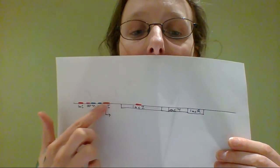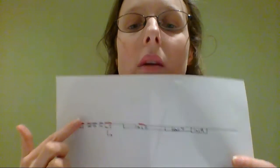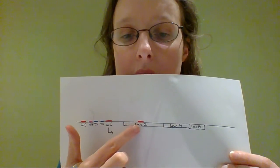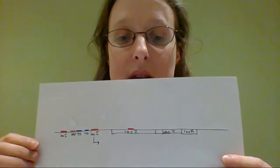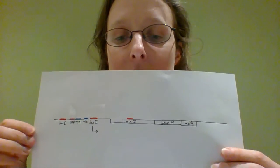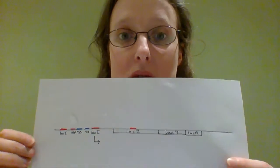And here we've got the operon itself: lac Z, lac Y, and lac A, and they're the genes that are going to be later transcribed and translated into the proteins that E. coli needs to be able to utilize lactose as its carbon source.